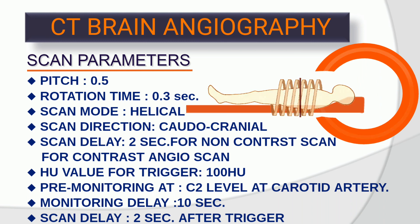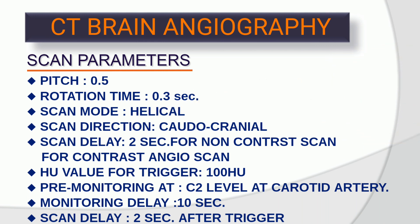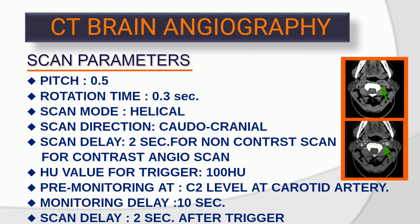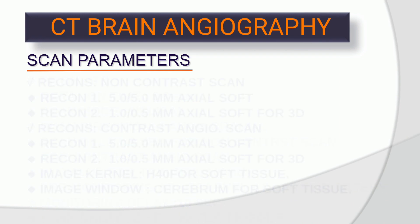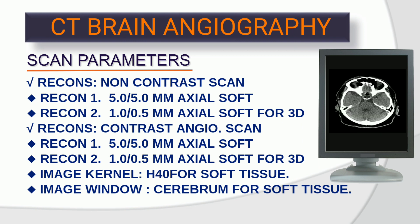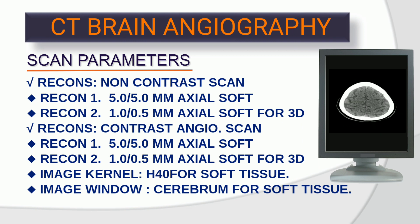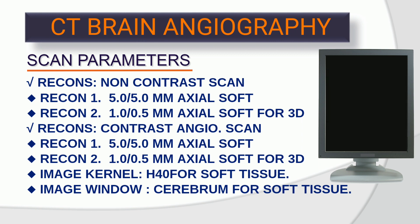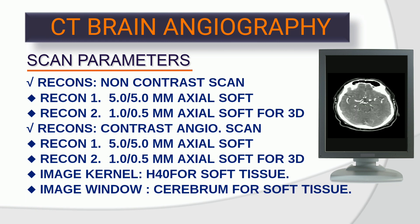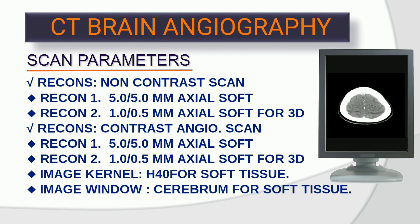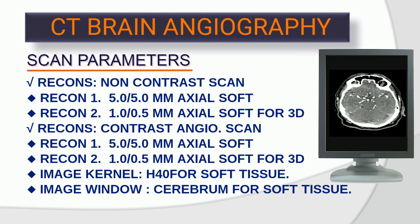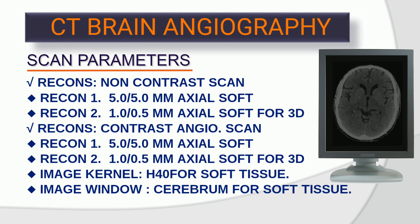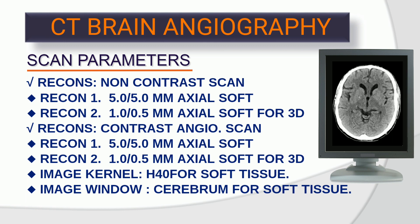Scan delay: 2 seconds for non-contrast scan. For contrast angio scan: HU value for trigger — 100 HU. Pre-monitoring at C2 level at carotid artery. Monitoring delay: 10 seconds. Scan delay: 2 seconds after trigger. Recons — non-contrast scan: Recon 1: 5 x 5 mm axial soft; Recon 2: 1 x 0.5 mm axial soft for 3D. Contrast angio scan: Recon 1: 5 x 5 mm axial soft; Recon 2: 1 x 0.5 mm axial soft for 3D. Image kernel H40 for soft tissue. Image window: cerebrum for soft tissue.